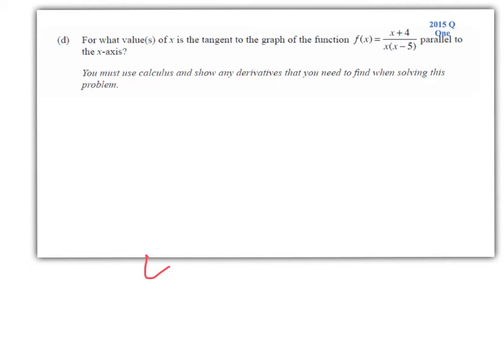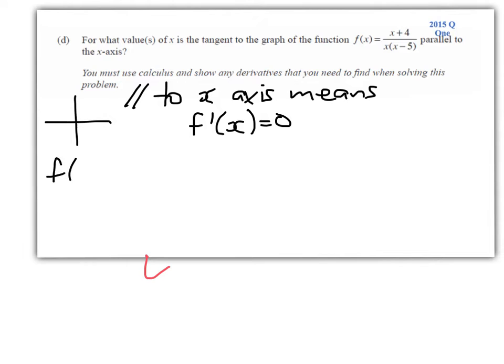For what values of x is the tangent to the graph of this function parallel to the x-axis? Parallel to x-axis means gradient is equal to 0. So we're going to start by rewriting the function. Actually, we don't really have to rewrite it. Well, I'm going to rewrite the denominator just because it's going to help me when I use the quotient rule.